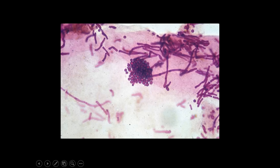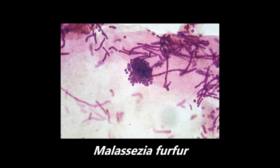Going back to some more microbiology, this is an example of Malassezia furfur seen under a KOH prep. It's commonly described as having a spaghetti and meatballs appearance — in the center you see the meatballs, and on the periphery you see the spaghetti. The primary condition caused by this organism is Tinea versicolor, also called Pityriasis versicolor. It's usually seen on the back as hypopigmented spots, and if you see something like that, think Malassezia furfur.